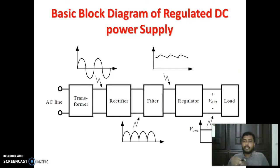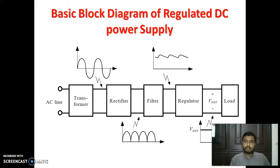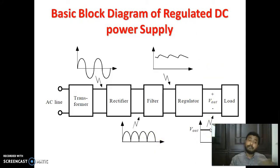After filtering, we connect it to a regulator to get a constant DC output, which is then given to the load. So the four main blocks are: transformer, rectifier, filter, and regulator. Before going into detail on each block, we need to understand the difference between pulsating DC and constant DC, and what exactly AC and DC are — which we will cover in the next video.